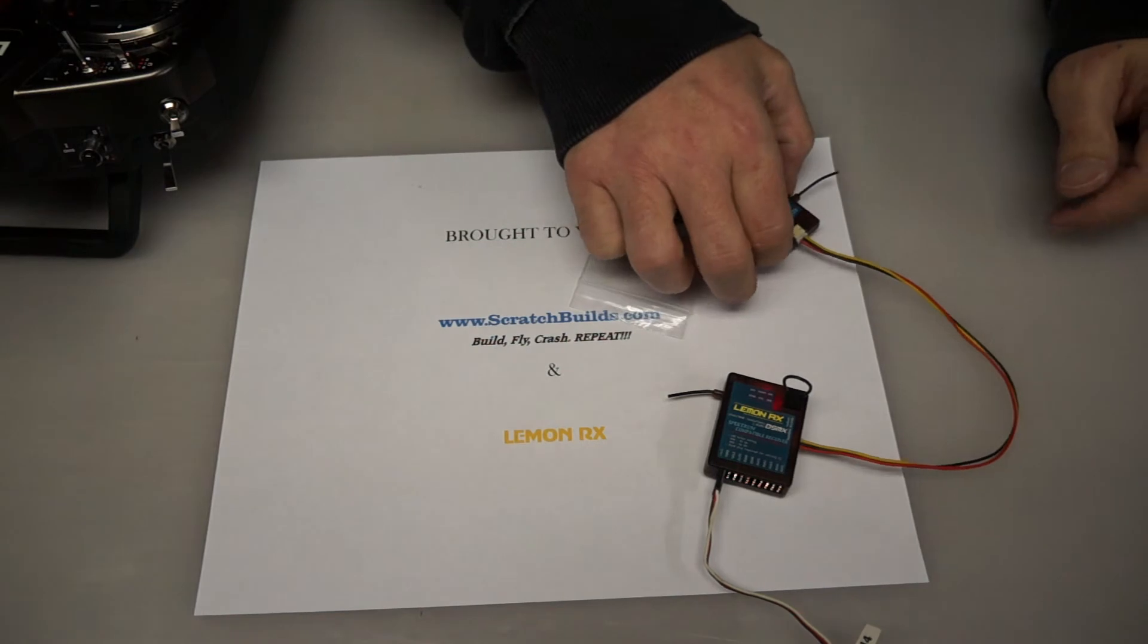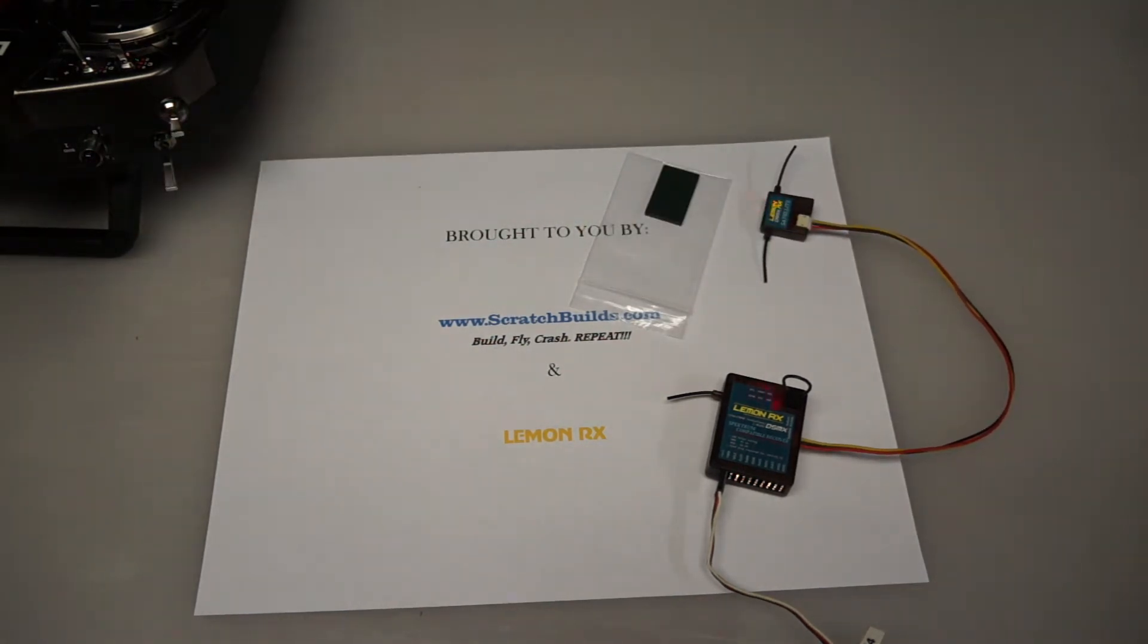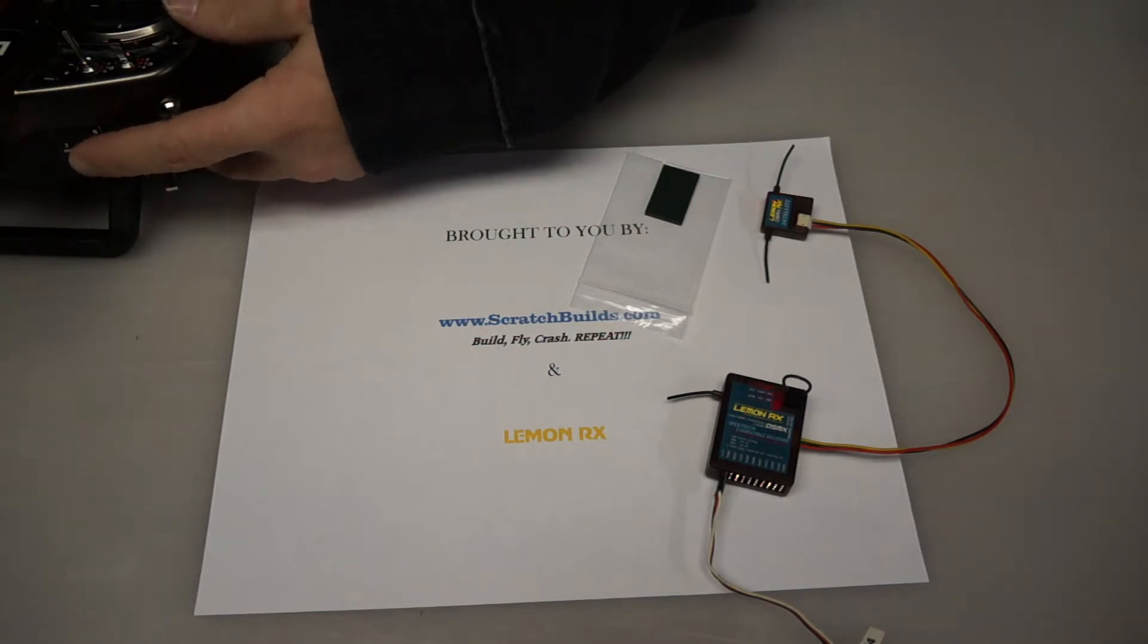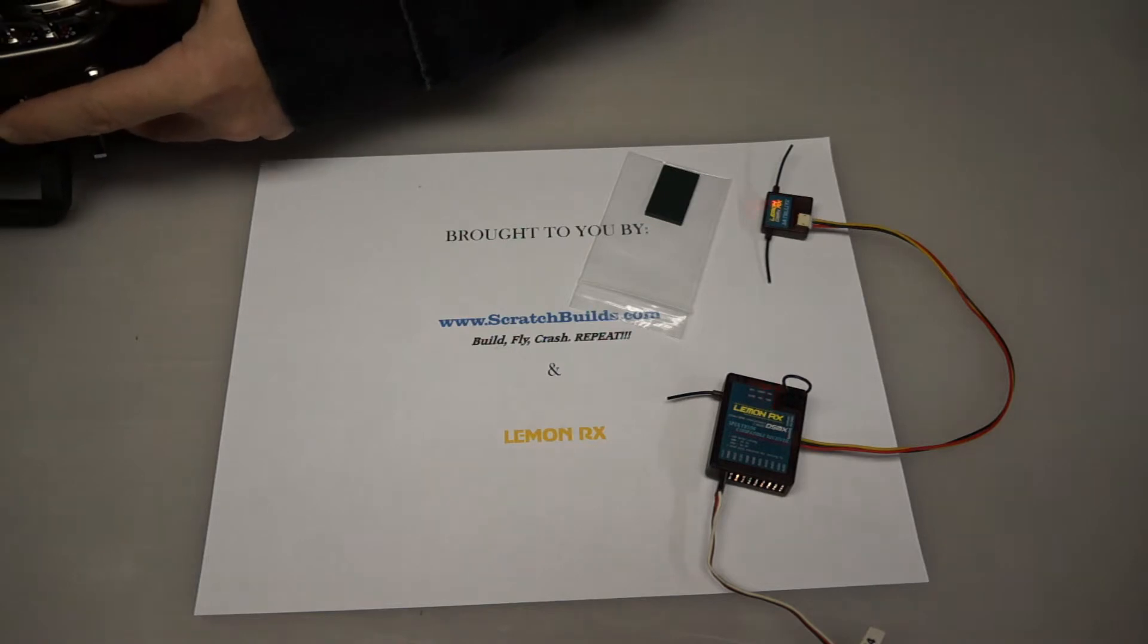So we're going to go to the next step, which is turning on the radio. But what you want to do is hold the bind button down on the radio and then turn the power on.